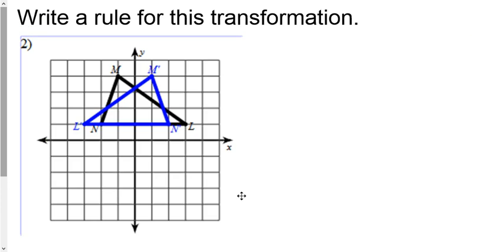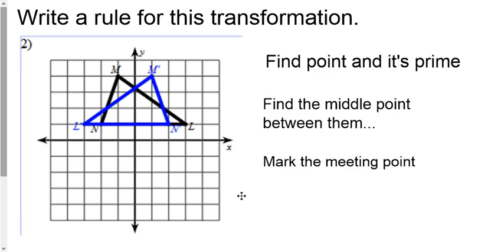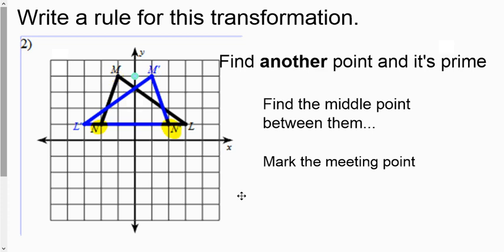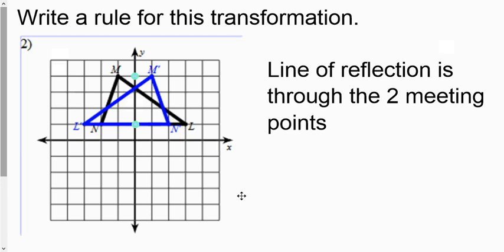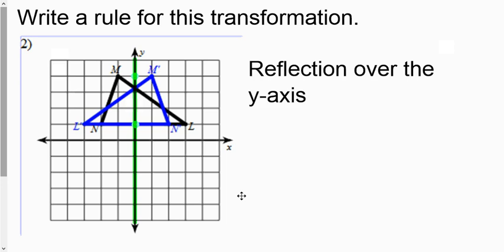Same thing happens here. Even though it gets messy, go find your point and its prime. There's M, there's M prime. Where did they meet? Right there. Mark it with a pencil, then move on to another dot. Even though it gets messy, just choose another set there. N looks to be closest to N prime, so let's use that one. Where do they meet? Right there. Now I've got those two points that we've found, and that is your line of reflection because it is a mirror image. They're crossing over each other. That's a sure sign that it's been reflected. This rule is just reflect over the y-axis.